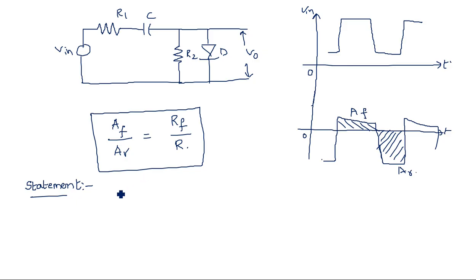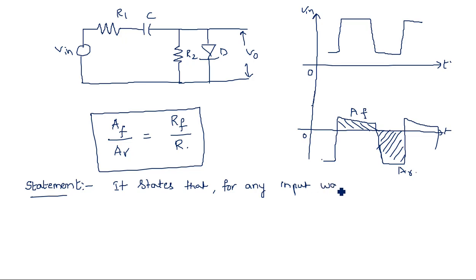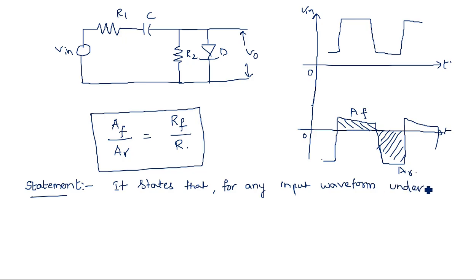To state it clearly: the clamping circuit theorem states that for any input waveform — not only square waveforms, but also triangular, sinusoidal, or any waveform having both positive and negative peaks — under steady state conditions, the ratio af/ar equals rf/r.